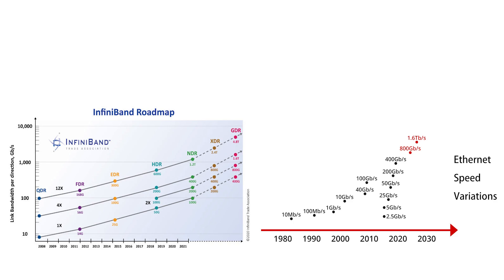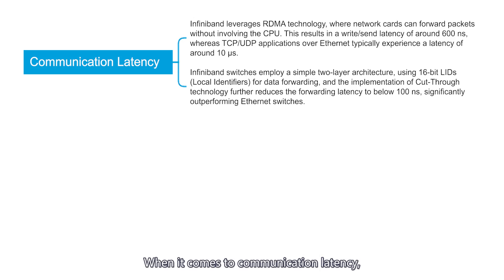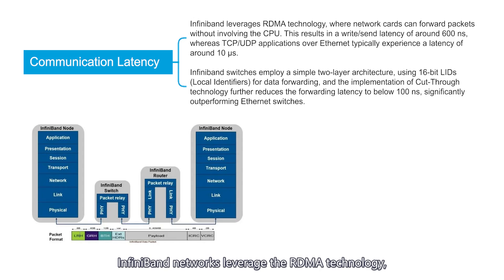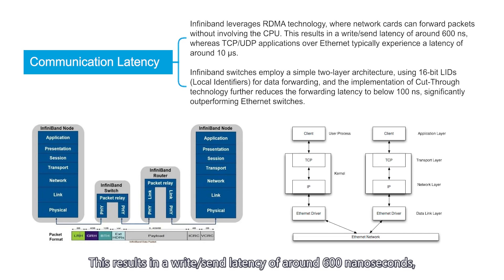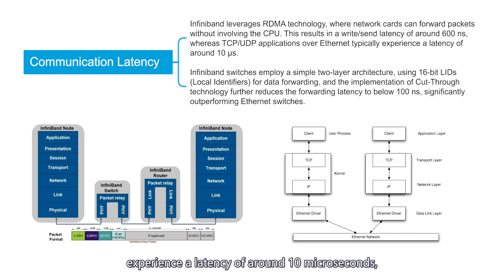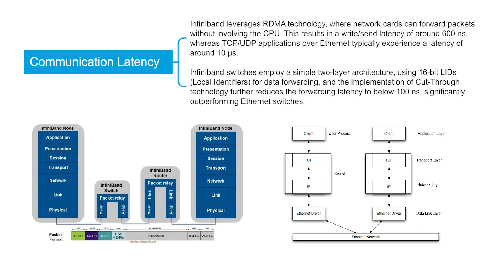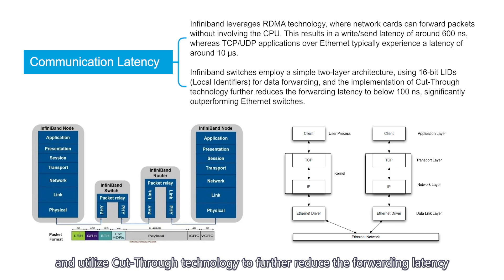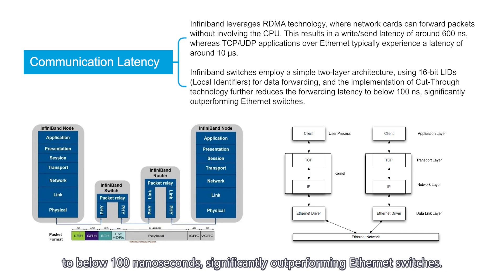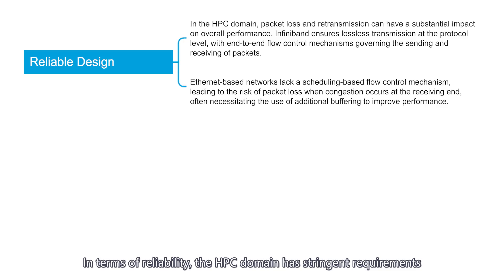When it comes to communication latency, InfiniBand networks leverage RDMA technology, allowing network cards to forward packets without involving the CPU. This results in a write-send latency of around 600 ns, whereas TCP/UDP applications over Ethernet typically experience a latency of around 10 microseconds — a difference of over an order of magnitude. Additionally, InfiniBand switches employ a simple two-layer architecture and utilize cut-through technology to further reduce forwarding latency to below 100 ns, significantly outperforming Ethernet switches.